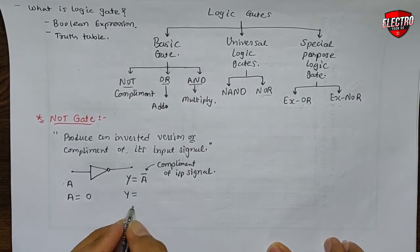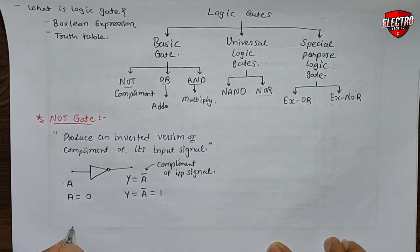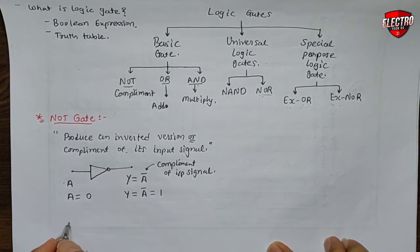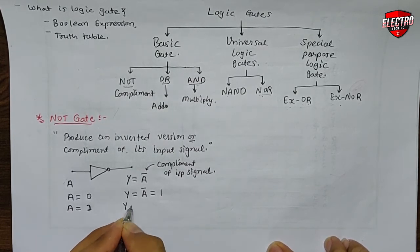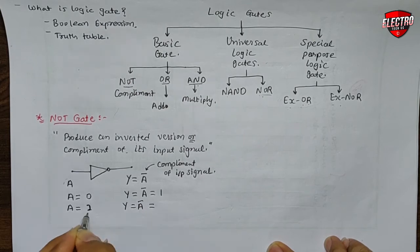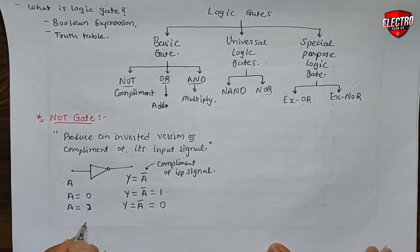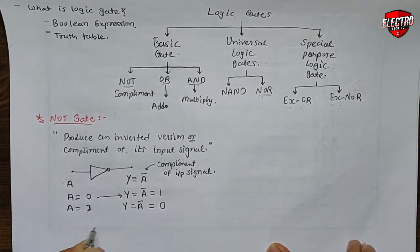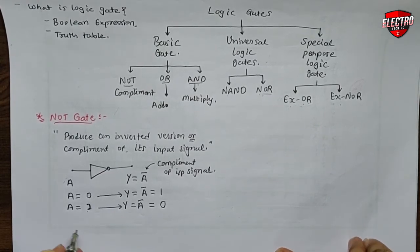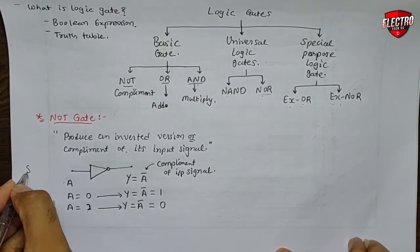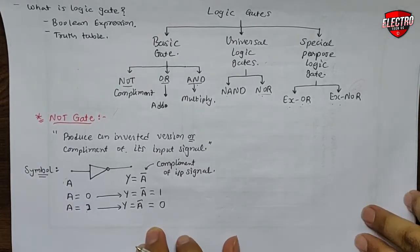So if A is equal to 0, then the complement of 0 produces 1 — A complement is equal to 1, the opposite value of the input signal. If A is equal to 1, then the output signal Y is equal to A complement, meaning if input is 1 then output is 0. If input signal is 0 then output signal is 1, and if input signal is 1 then output signal is 0.